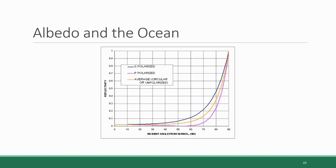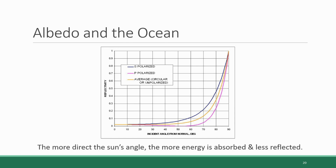Most of the Earth's surface isn't covered in terrain at all, but rather ocean, and ocean has an albedo capacity as well. When it comes to bodies of water, the albedo varies significantly based on the angle of the sun — the more direct the sun's angle, the more energy is absorbed by the water and the less is reflected. The graph shows the relationship between reflectivity or albedo on the vertical y-axis and the angle of the sun on the horizontal x-axis.